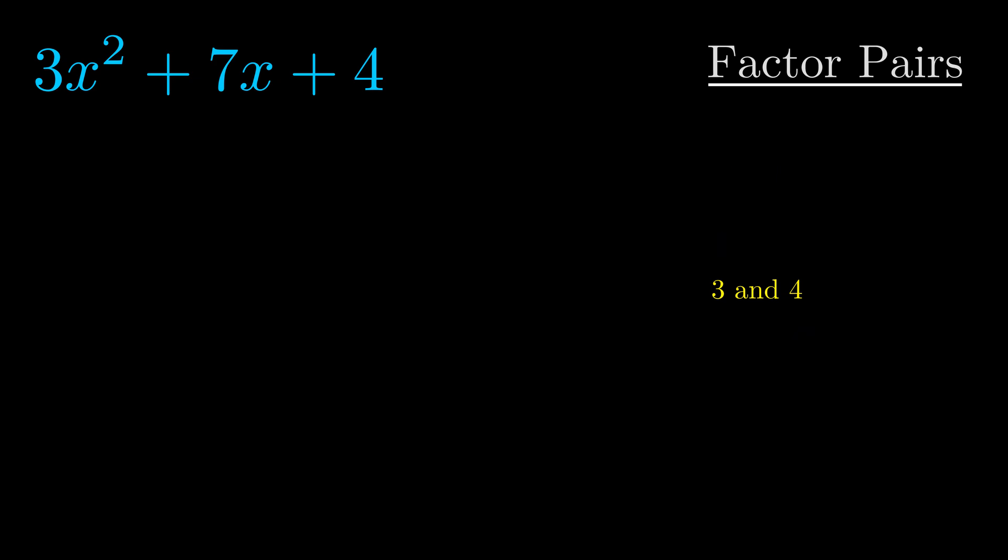Now once we have this factor pair, what we want to do is use it to split up the b value.